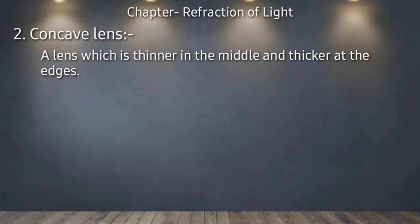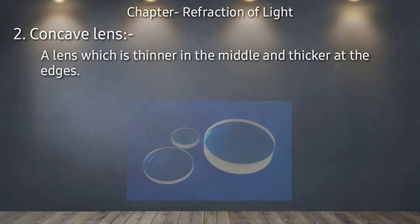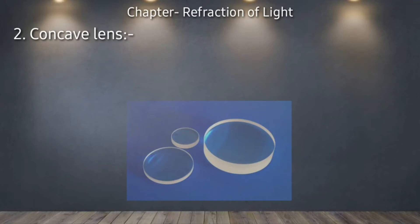Now let's discuss the concave lens. A lens which is thinner in the middle and thicker at the edges is called a concave lens. एक ऐसा lens जो बीच में से पतला होता है और जिसके किनारे मोटे होते हैं, उसको concave lens कहा जाएगा।